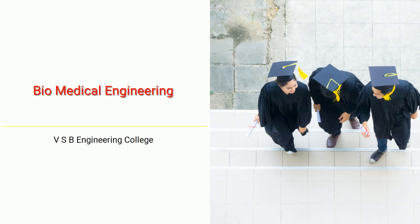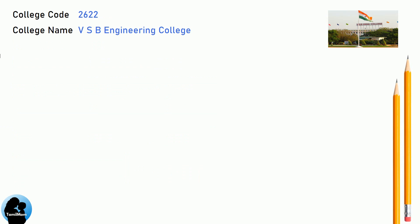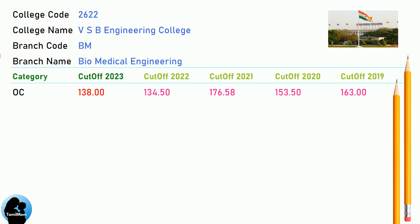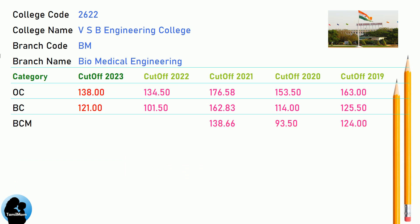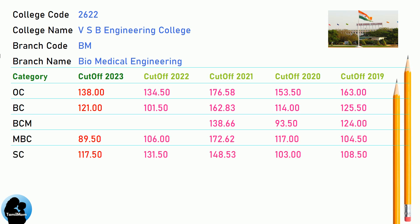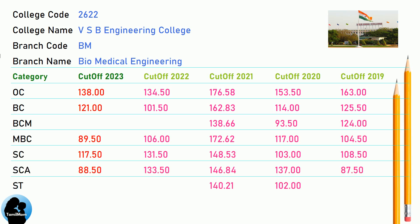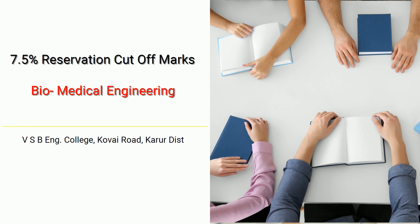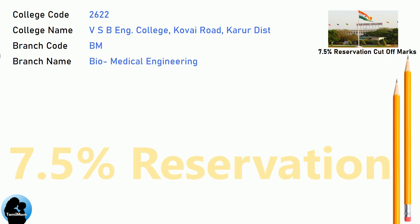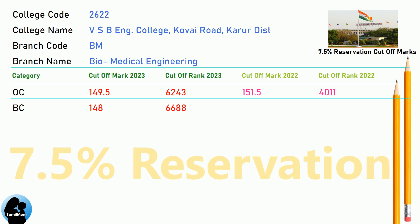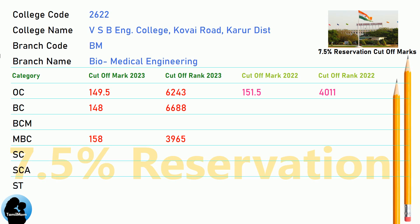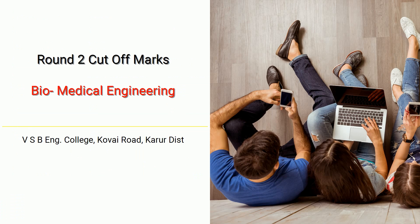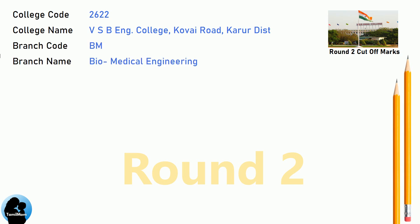DNA Cut-Off for VSB Engineering College in Biomedical Engineering. DNA 7.5 Reservation Cut-Off for VSB Engineering College in Biomedical Engineering. DNA Round 2 Cut-Off for VSB Engineering College in Biomedical Engineering.